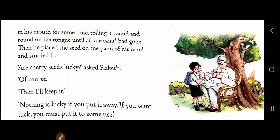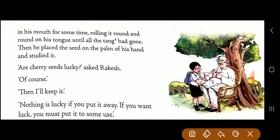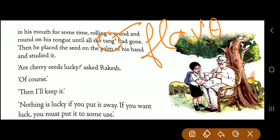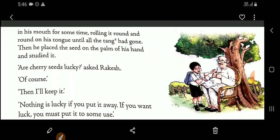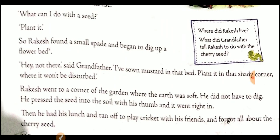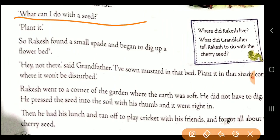Grandfather kept the seed in his mouth, rolling it on his tongue until the tang — meaning strong taste or flavor — was gone. Finally he placed the seed on his palm and studied it. Then Rakesh asked, 'What can we do with the seed?' Of course, grandfather said: plant it.